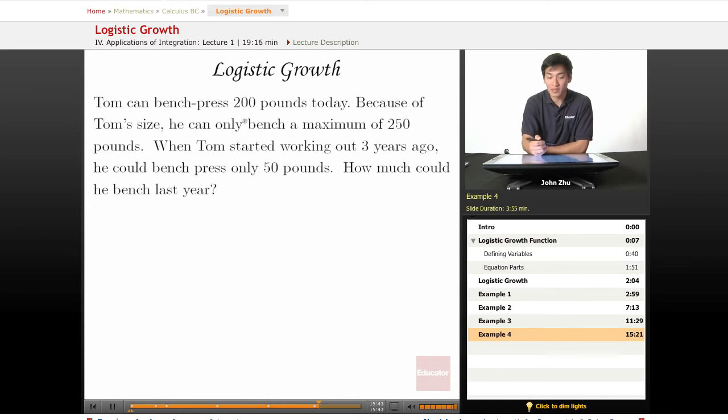Tom can bench press 200 pounds today. So at T equals some value, P of that T value equals 200. Because of his size, he can only bench a maximum of 250 pounds. So right away, we know that K equals 250.